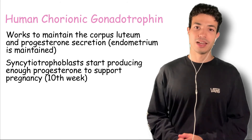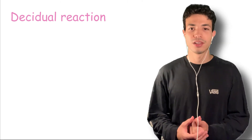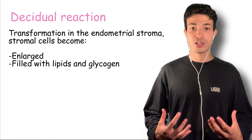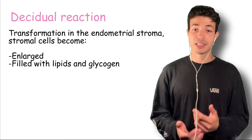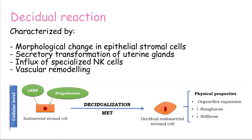The syncytiotrophoblasts end up developing into the placenta, but we won't go into much detail on placentation in this video. There is also a maternal reaction to implantation called the decidual reaction. This involves a transformation in the endometrial stroma where stromal cells become enlarged and filled with lipids and glycogen, and at this point the endometrial stroma is referred to as the decidua. This process is characterized by morphological changes in epithelial stromal cells, secretory transformation of the uterine glands, an influx of specialized uterine natural killer cells, and vascular remodeling to support the maternal blood supply to the growing conceptus.